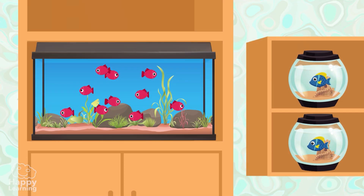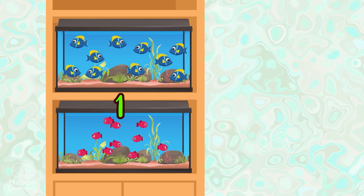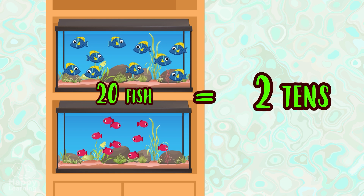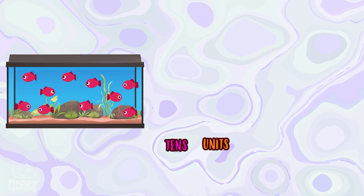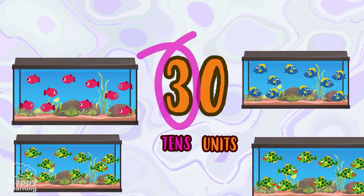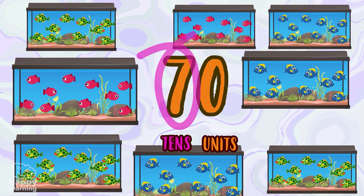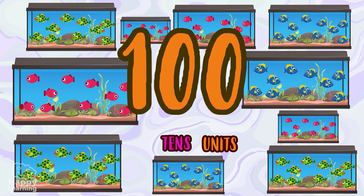Now imagine that the number of fish is increasing, and you fill two fish tanks, and each tank has ten fish. We would have two lots of ten! The tens start from ten and go up in tens: ten, twenty, thirty, forty, and so on, up to the number ninety. One more ten, and we would have one hundred!